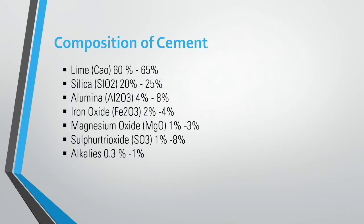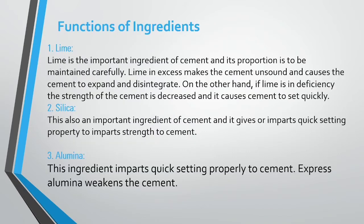Composition of cement: Lime (CaO) 60–65%, Silica (SiO2) 20–25%, Aluminium 4–8%, Iron Oxide 2–4%, Magnesium Oxide 1–3%, Sulphur Trioxide 1–3%, Alkalis 0.3–1%.